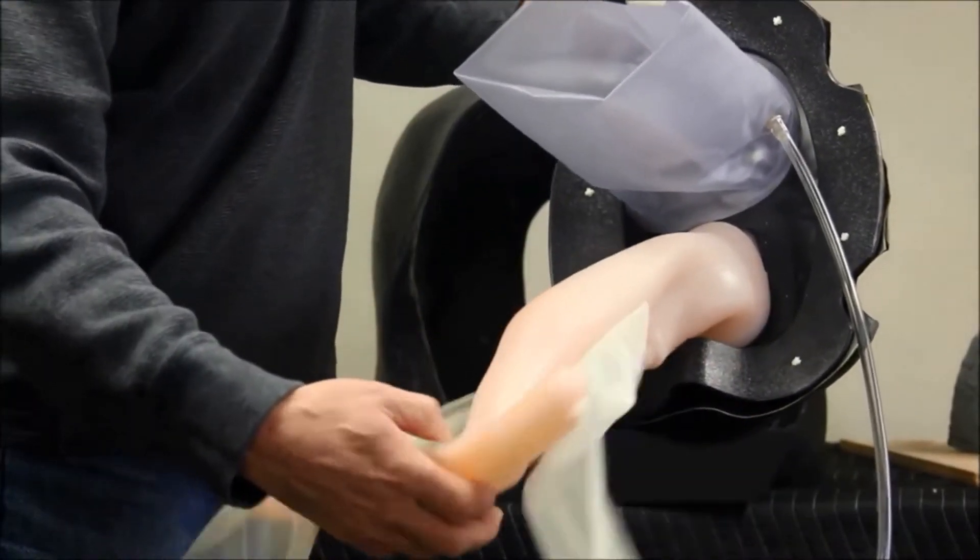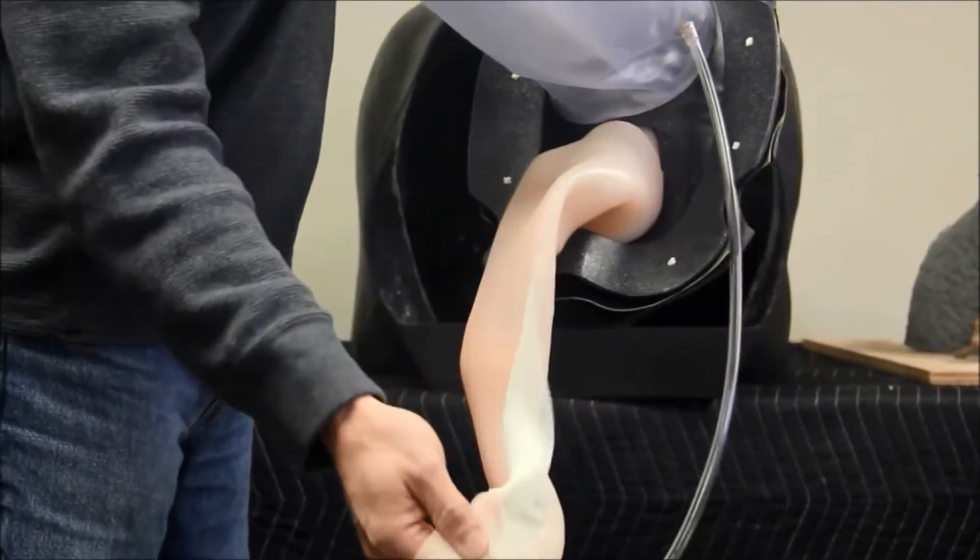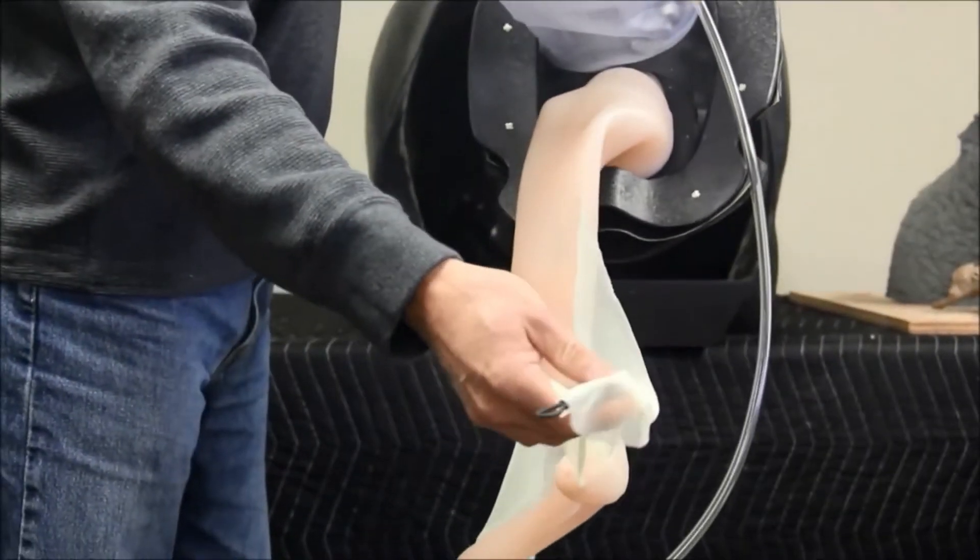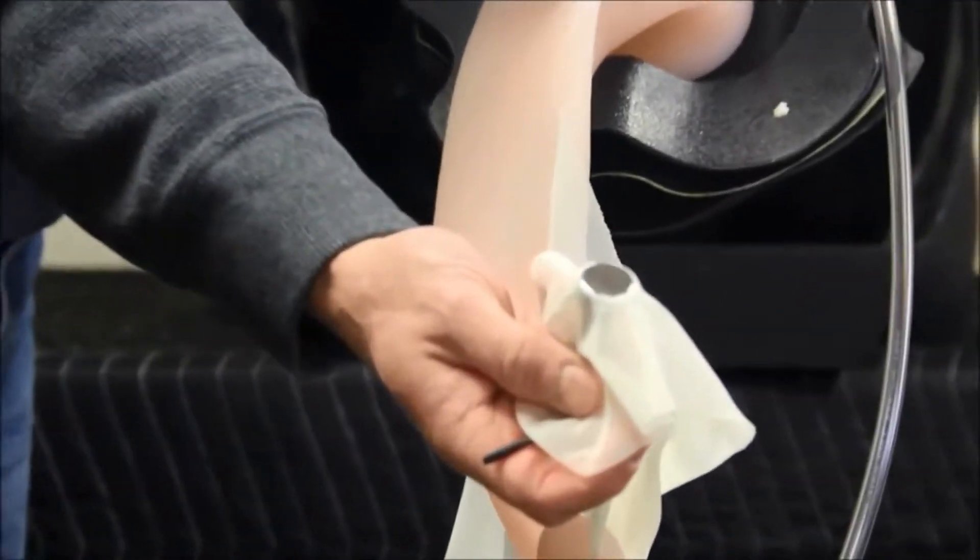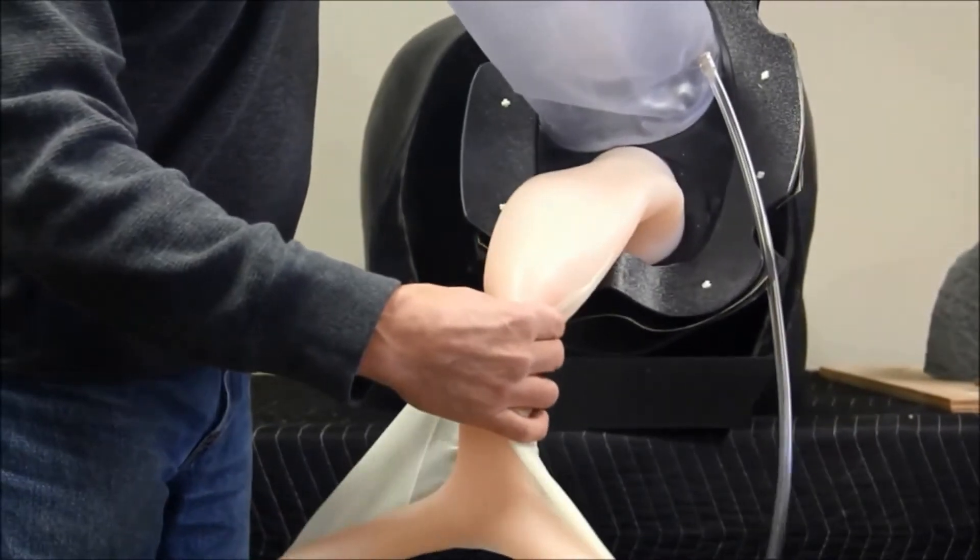This is the equine uterus. The ovaries are attached using these small openings at the end of the uterine horns. The broad ligament is represented by the fabric and mounts to the body wall with the attached magnets. It also has a palpable cervix.